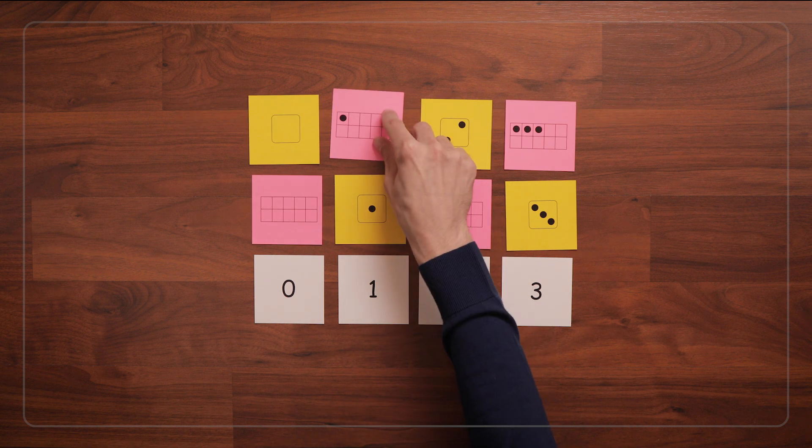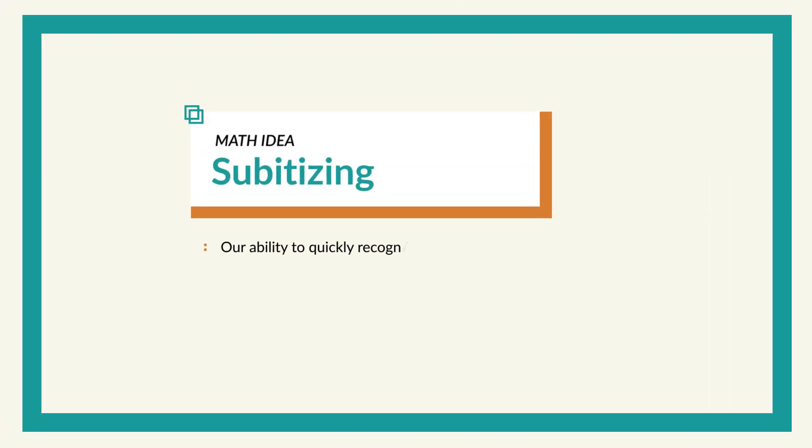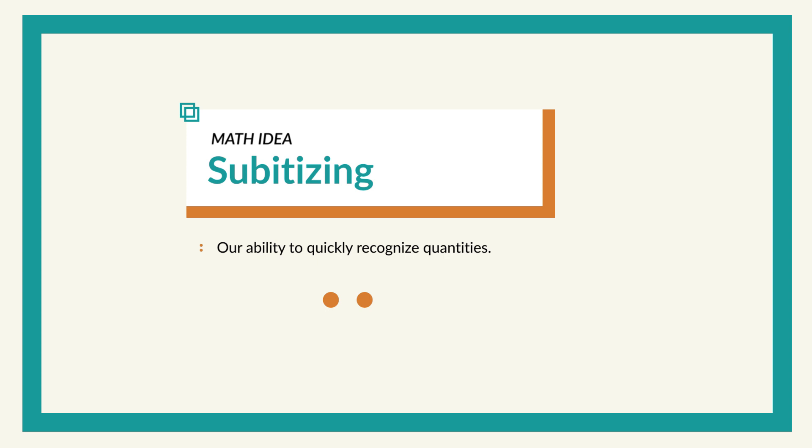As you play this game, you might notice children using a skill called subitizing. Subitizing is our ability to quickly recognize quantities. It's an important skill for kids to practice because it helps form a foundation for basic math skills.